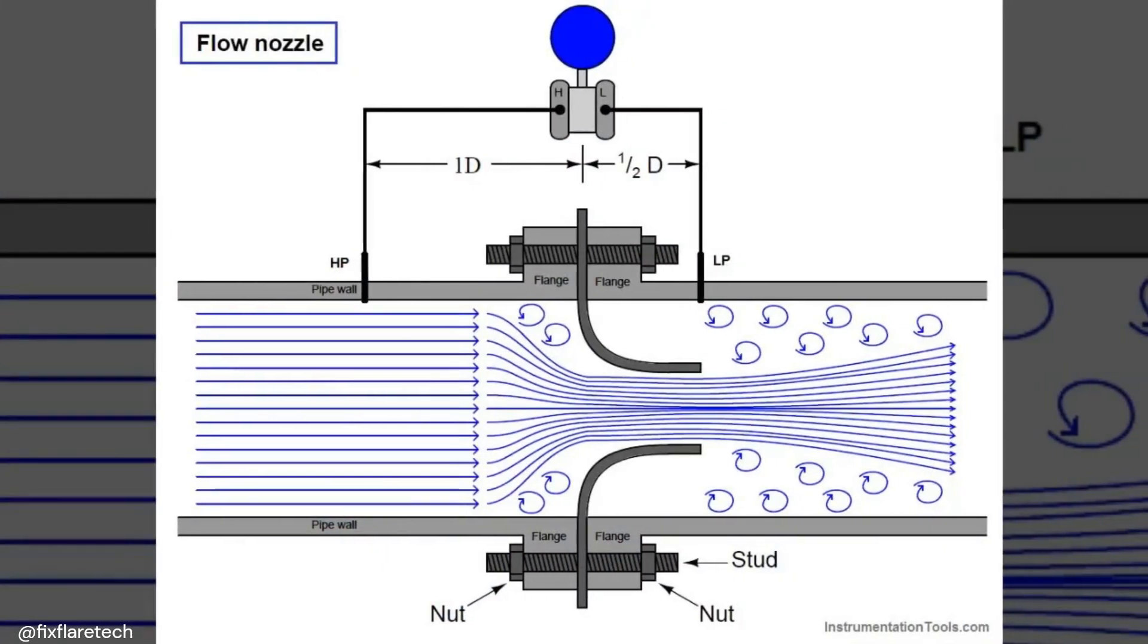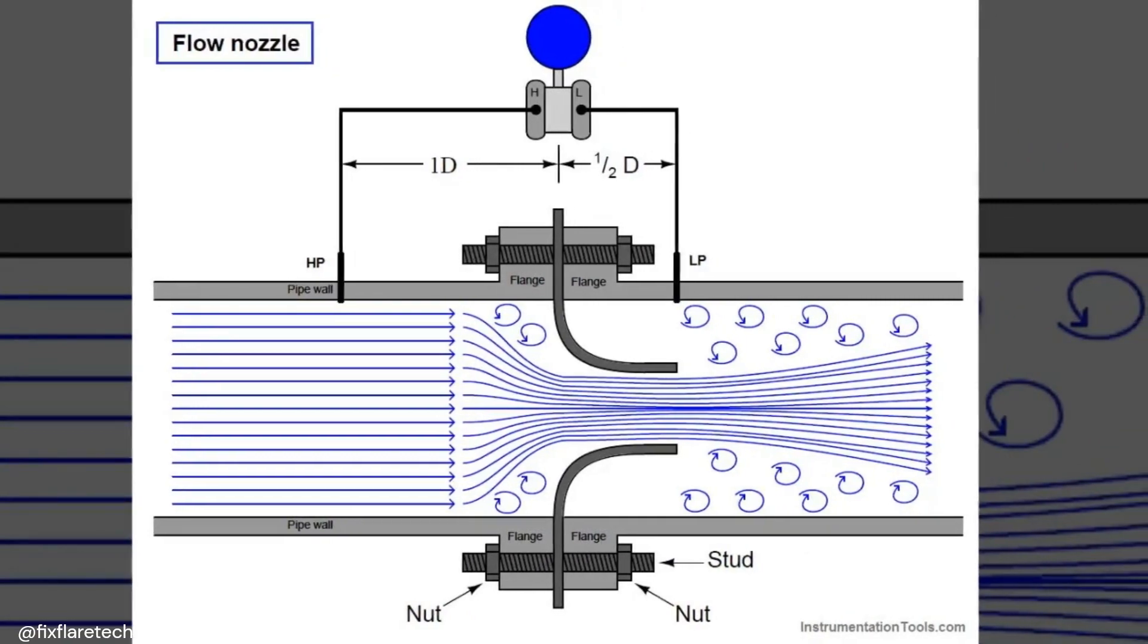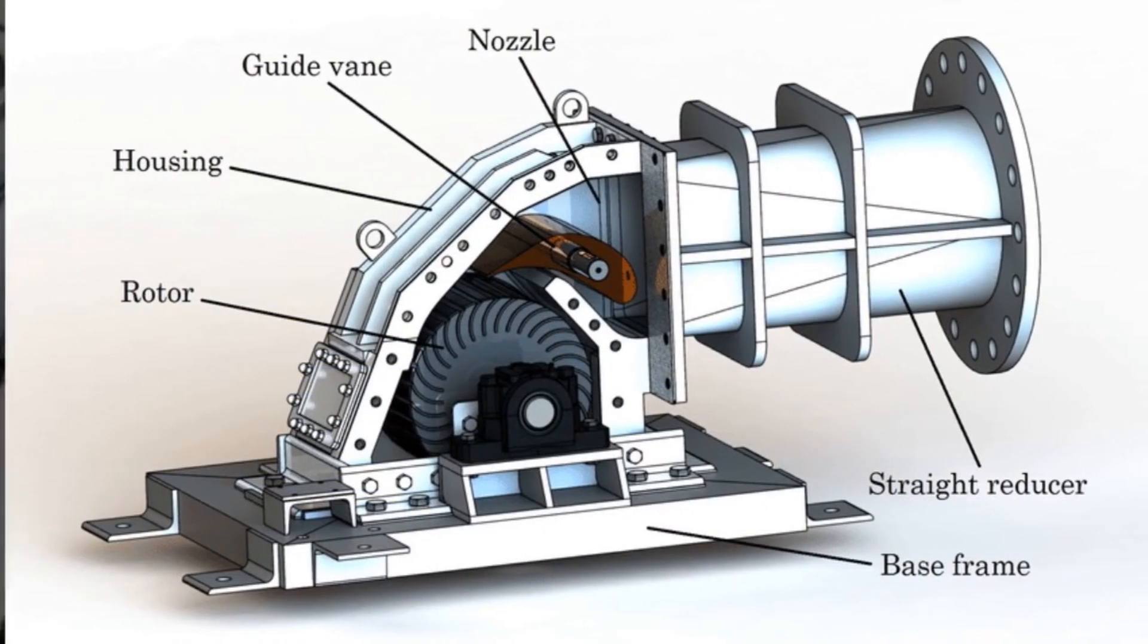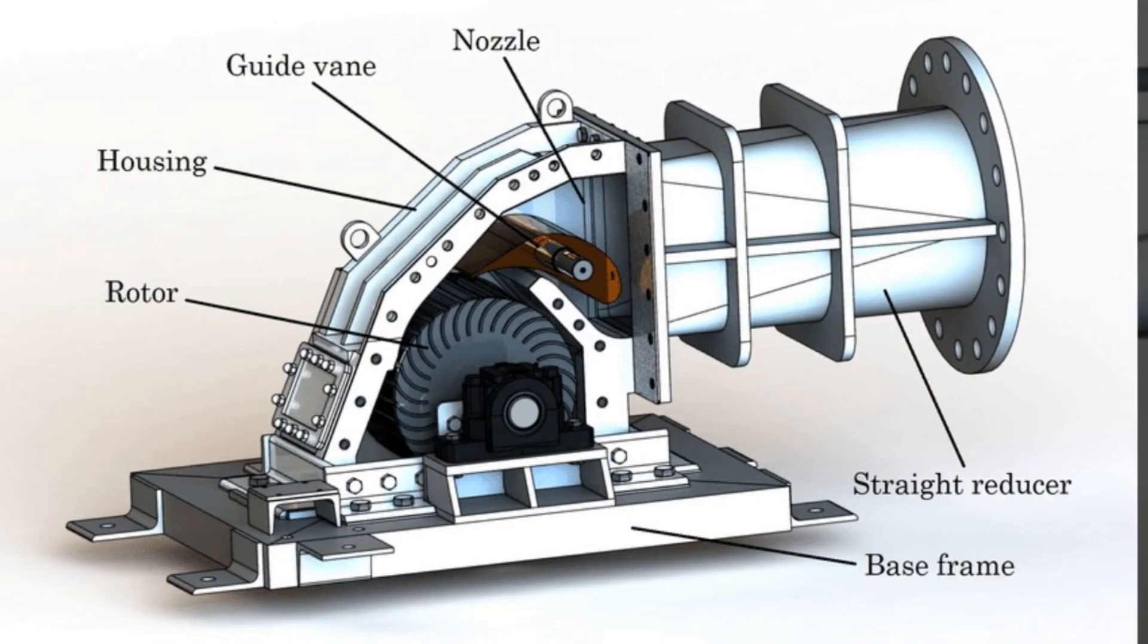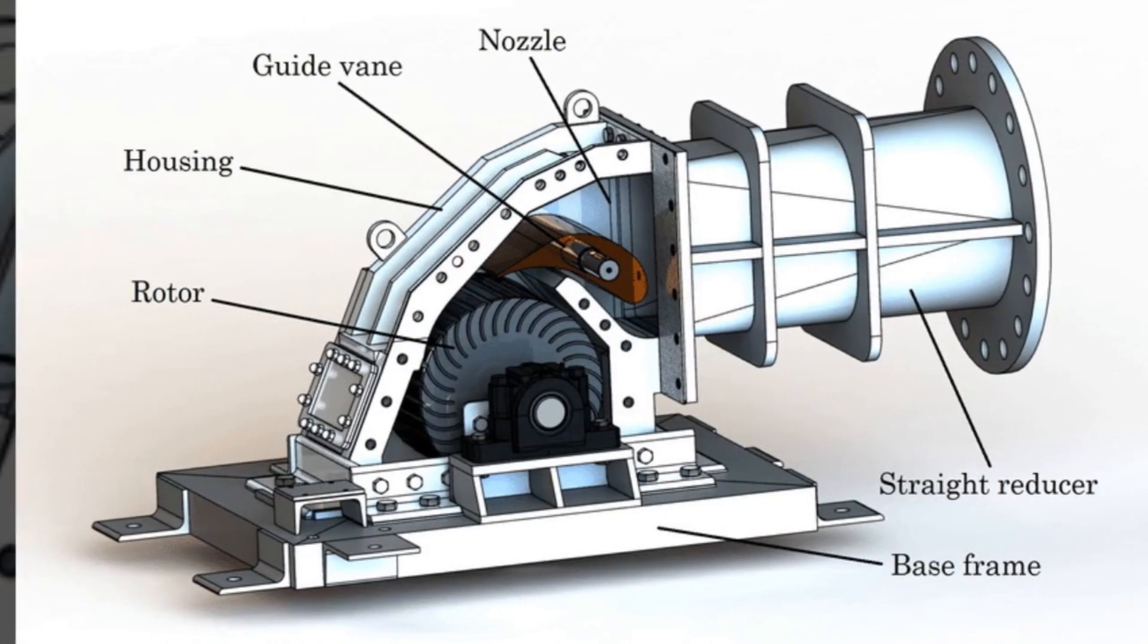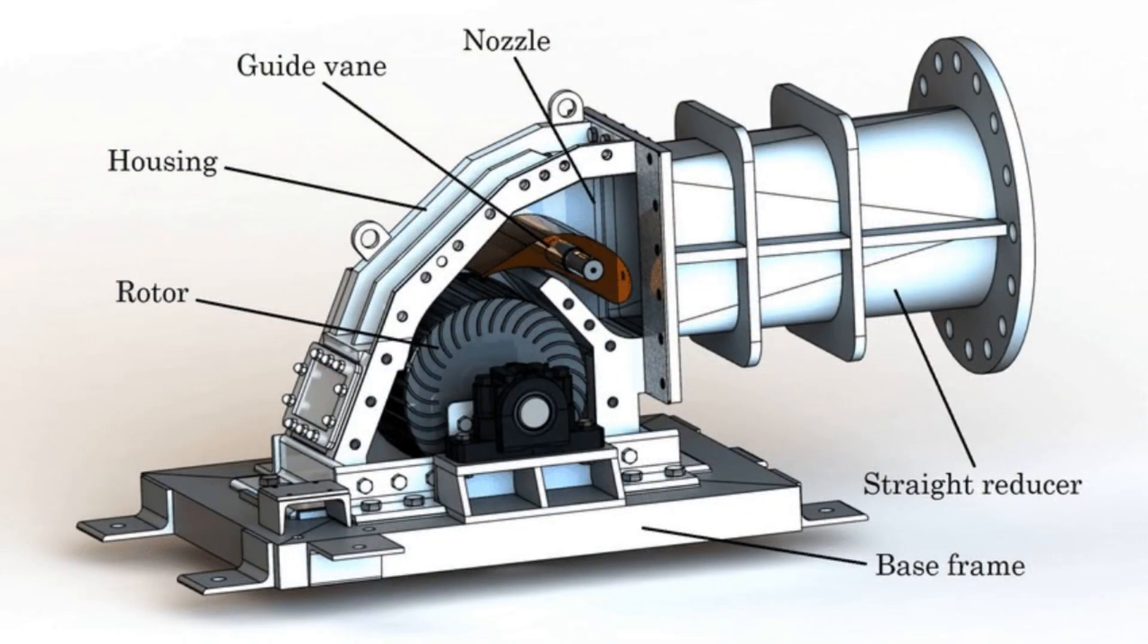Next, we have the inlet nozzle, or distributor. This component ensures an efficient flow of water towards the runner blades. It plays a crucial role in maintaining the correct angle and velocity of water entering the turbine, optimizing energy conversion.